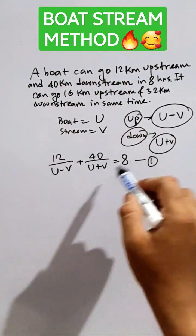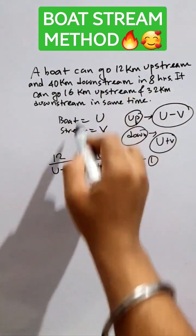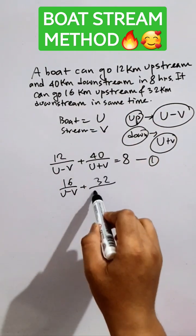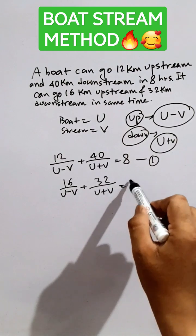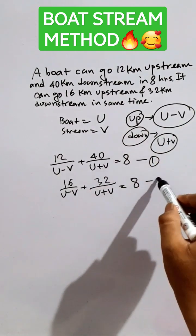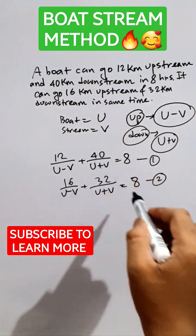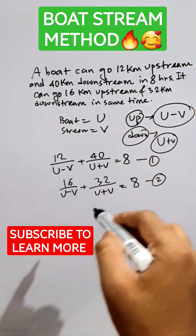Equation two, that is 16 kilometers upstream, that is 16 by u minus v, plus 32 kilometers downstream, that is 32 by u plus v. It will be eight. The same time has been taken. Now these equations must be solved to find u and v. So that's for today.